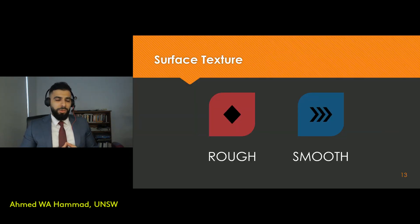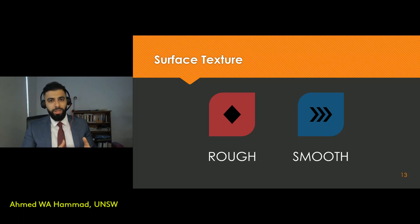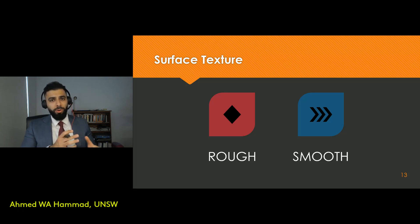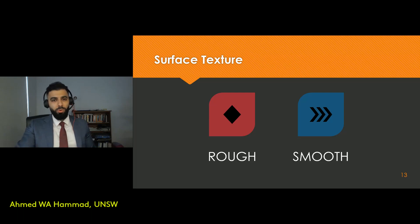Another classification system relies on surface texture. You can have aggregates with a rough texture versus a smooth texture. Smooth aggregates make your concrete mix more workable and easy to move around. Rough aggregates provide a stronger bond between the aggregates and the cement binder. Again, it's important to maintain a balance between these two textures.